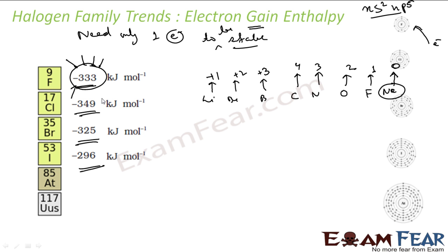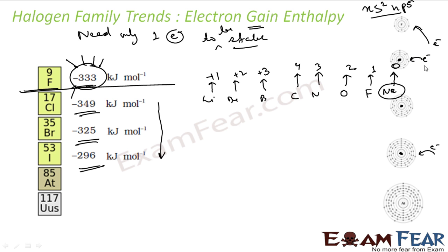The electron gain enthalpy value decreases down the group. From chlorine to bromine to iodine, the value decreases. Iodine cannot attract electrons as easily as chlorine. Chlorine, being smaller, can attract electrons more easily and emits 349 kilojoule per mole of energy. Iodine still needs one electron for stability but emits only 296 kilojoule per mole. Thus, the value of electron gain enthalpy decreases down the group. The fluorine anomaly — why its value is less despite its small size — will be discussed next.